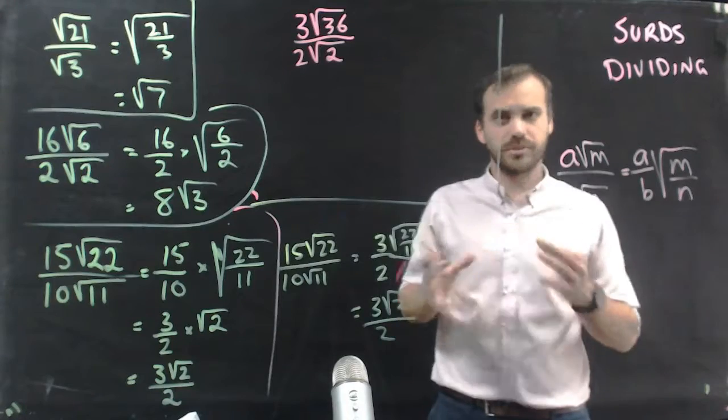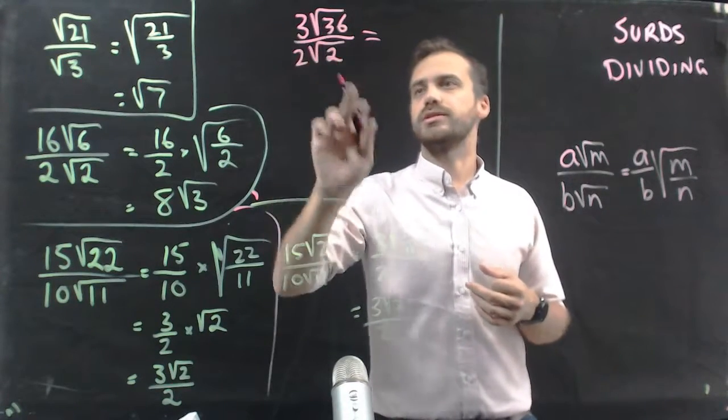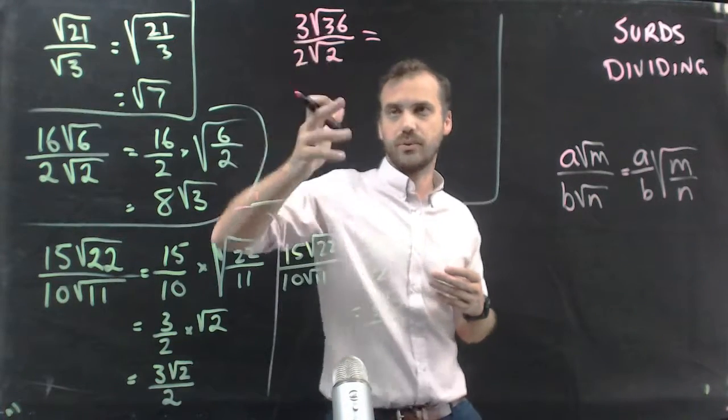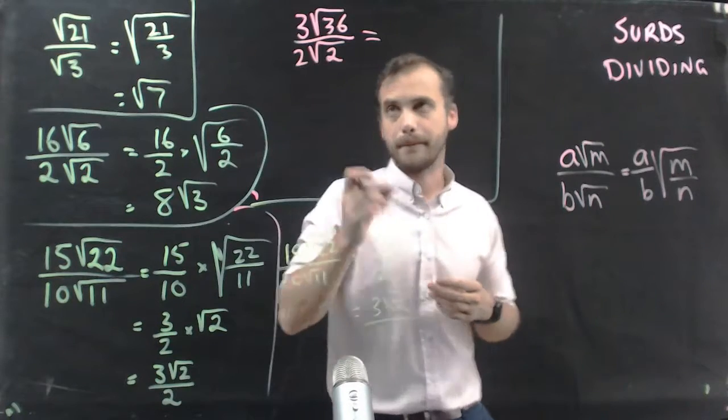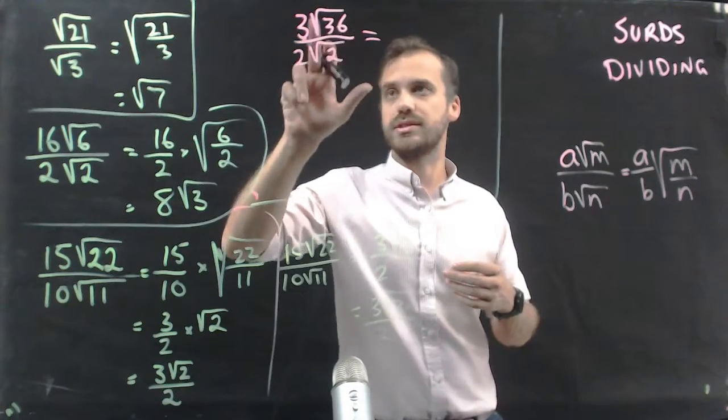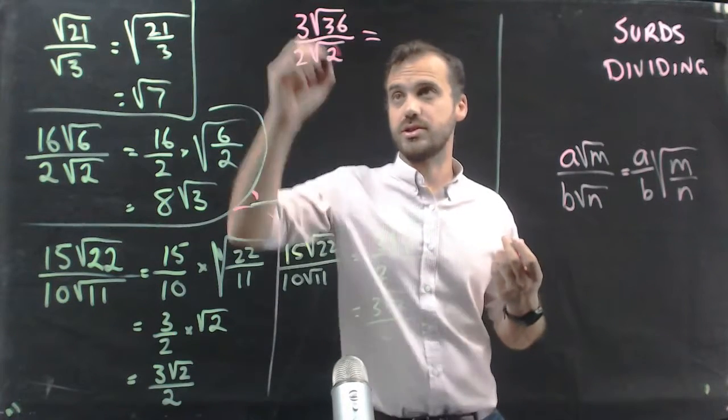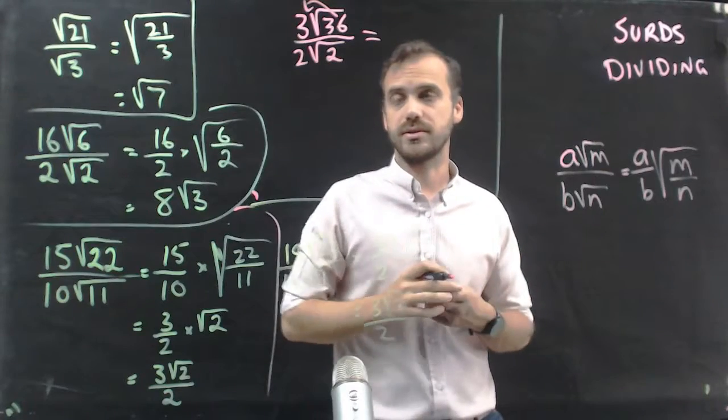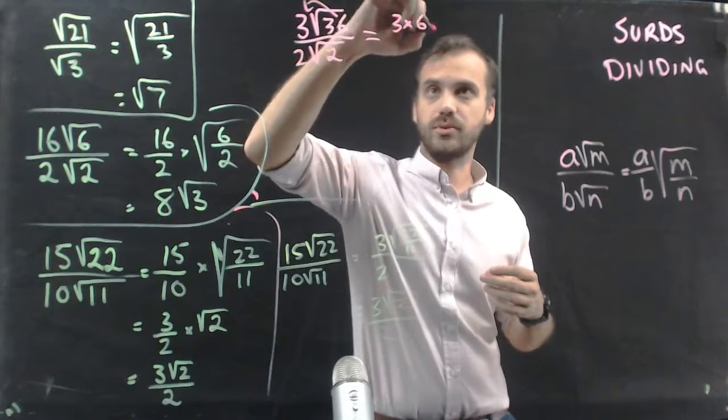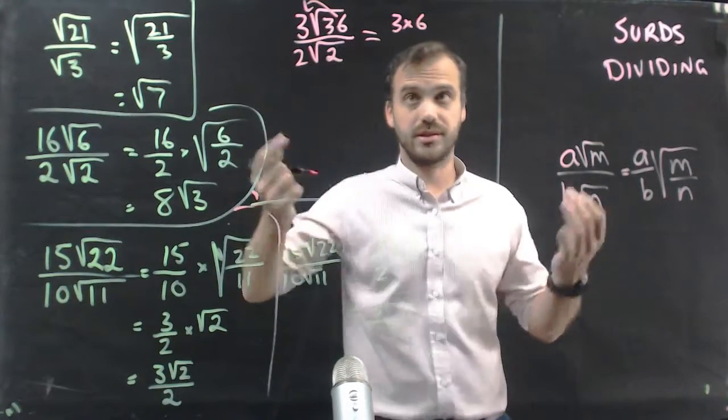The last one, and you want to be a bit wary of this, is 3√36 over 2√2. It's tempting here to start working on this straight away, but you should be able to look and see that you can simplify √36. So what we end up with is 3 times 6, with no root here at all. The root just disappears because the square root of 36 is 6.